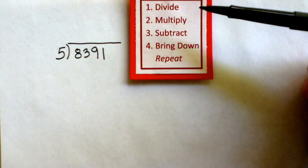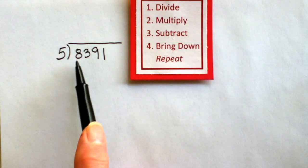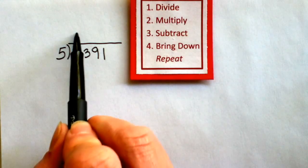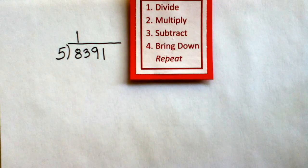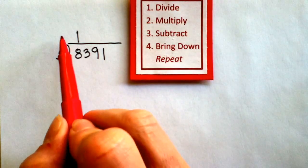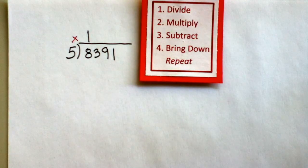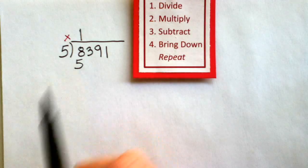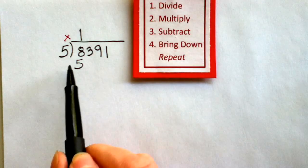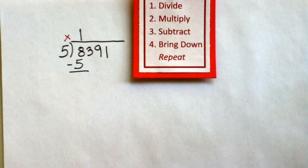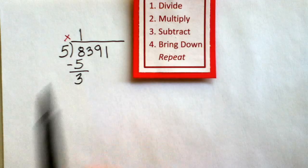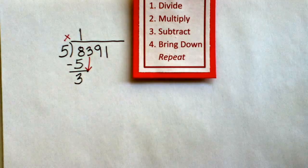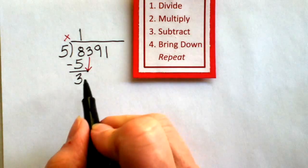So the first step, divide. Does 8 divide by 5? Well, yes it does, one time. Second step, multiply. 1 times 5 is 5. Third step, subtract. 8 minus 5 is 3. Fourth step, bring down the next number, 3.